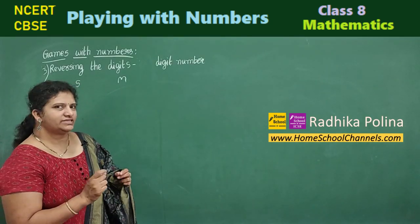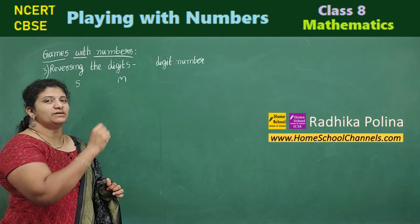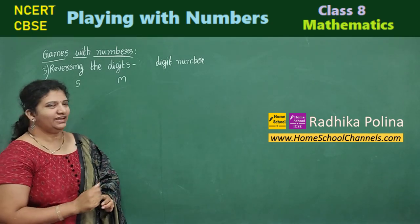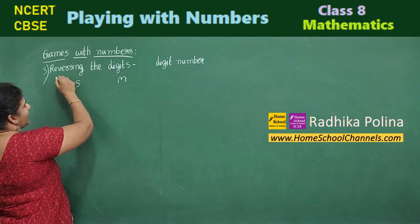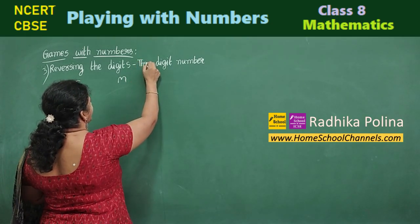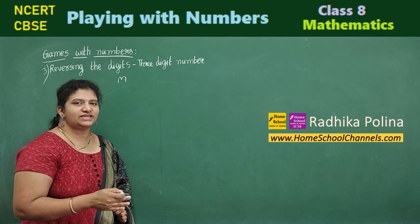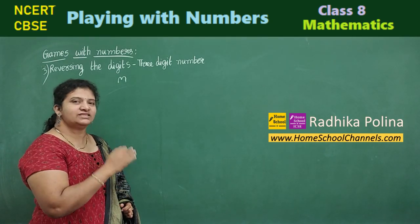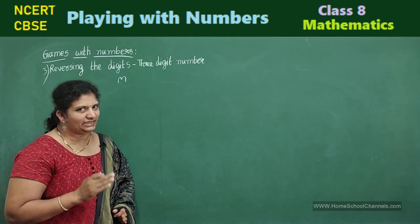Now let's see next game. Now it's Sundaram's turn to play some tricks with Meenakshi. And this game we write it as reversing the digits and here it is three digit number. Till now we have seen two digit number. Now in this game we are going to see three digit number.